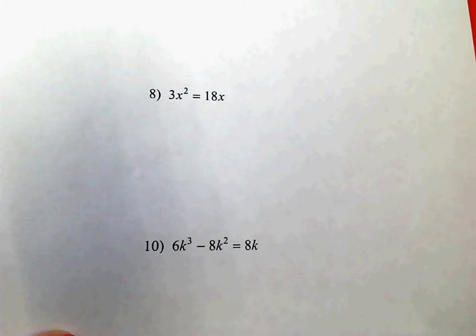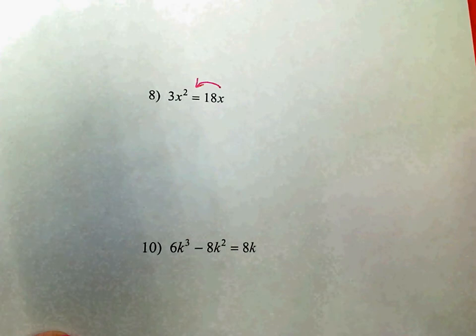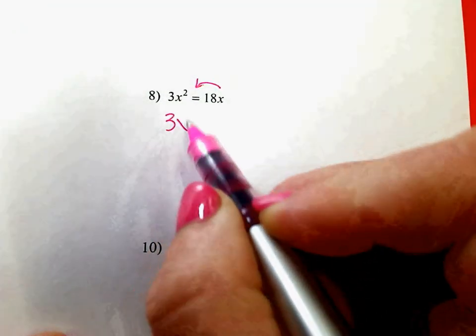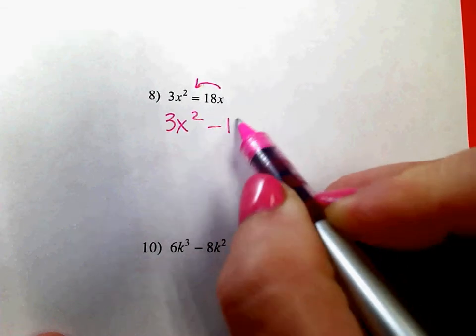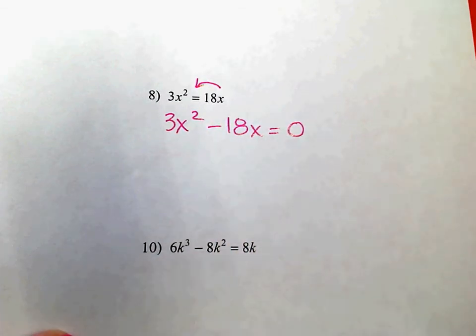Number 8, the problem is not equal to 0, so my starting point is to move that positive 18x to the other side so that it's equal to 0. It's going to get a sign change when it moves over. So I have minus 18x equals 0 now.